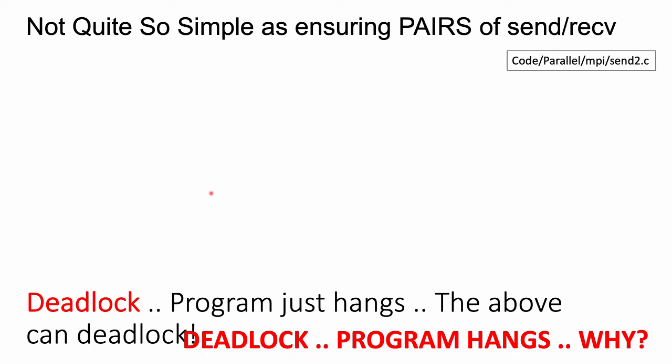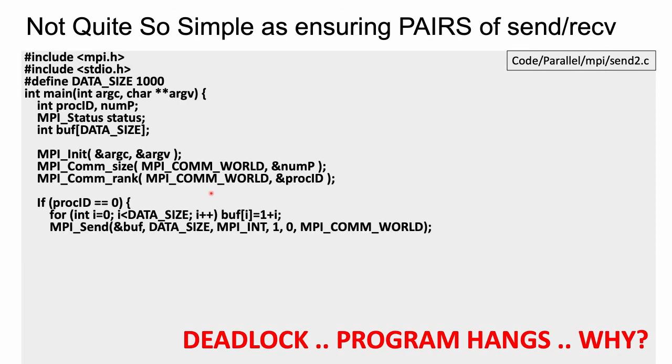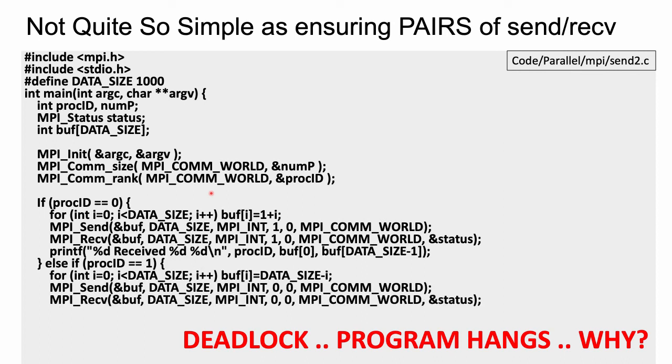So when we're doing malloc and free and new and delete, we always made sure we did things in pairs. Send and receive, it's not quite so simple. So here I have a program. Process ID zero is going to send something and then receive a buffer. Process ID one is also going to send his buffer and receive it. That's why we only had to create one integer array of size buffer. So they could send the information and then receive the information in that same buffer.